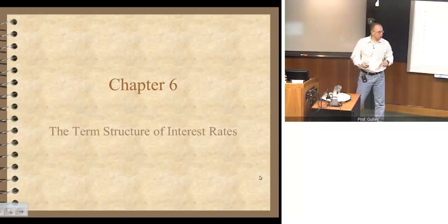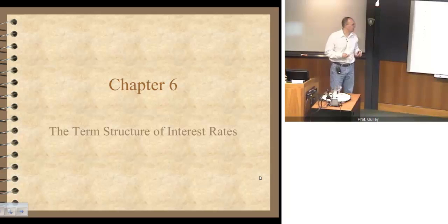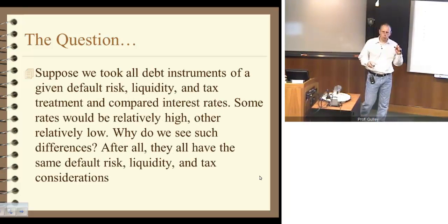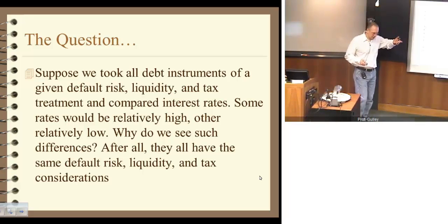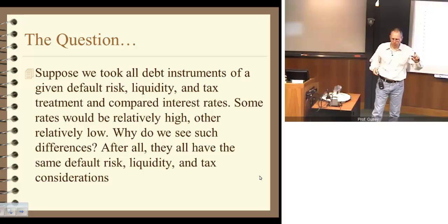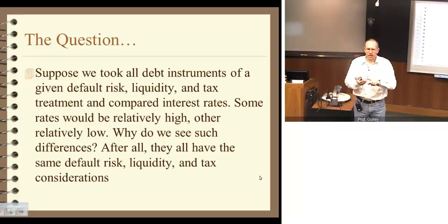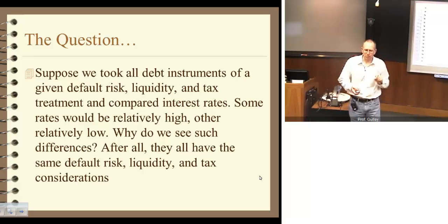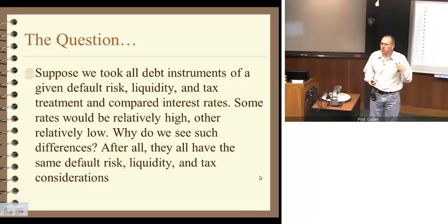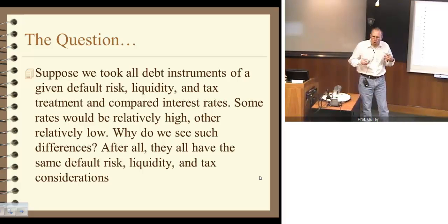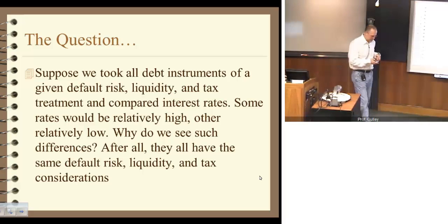Hello, everyone. Welcome back. We're now looking at Chapter 6 in Money and Banking, and we're going to turn to the term structure of interest rates. The question here is a little different than when we were talking about the risk structure of interest rates. The idea is we want to take what we did with the risk structure and turn it on its head. Now we want to fix liquidity, fix default risk, and fix tax considerations — making those things identical across bonds — and vary the maturity to see why bonds with different maturities, but all other factors equal, have different interest rates.